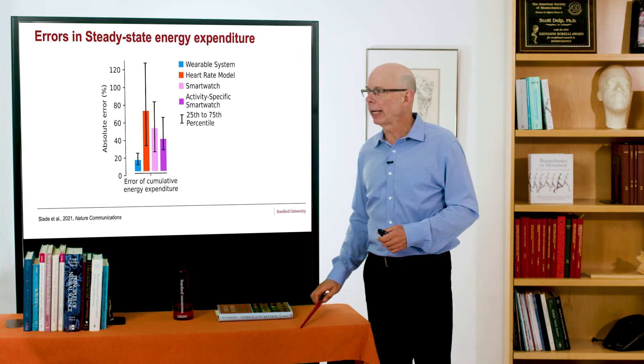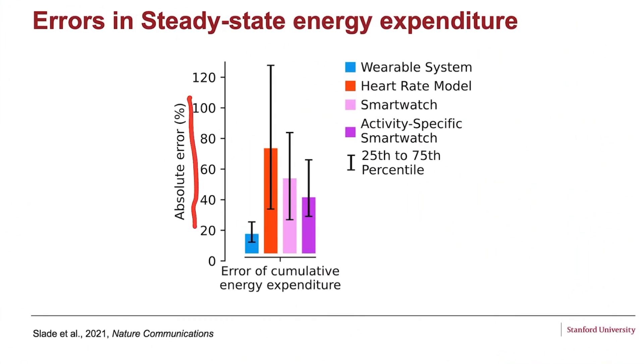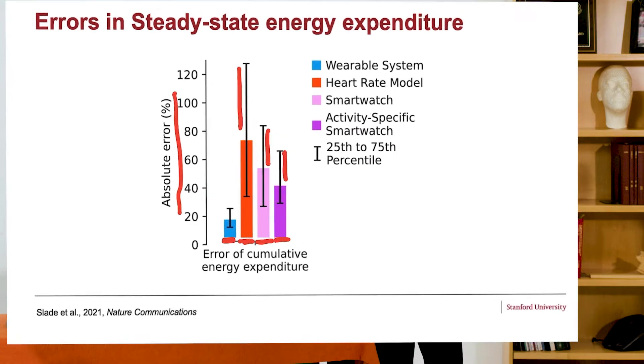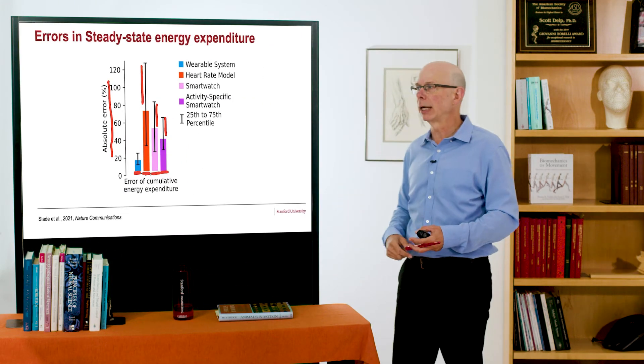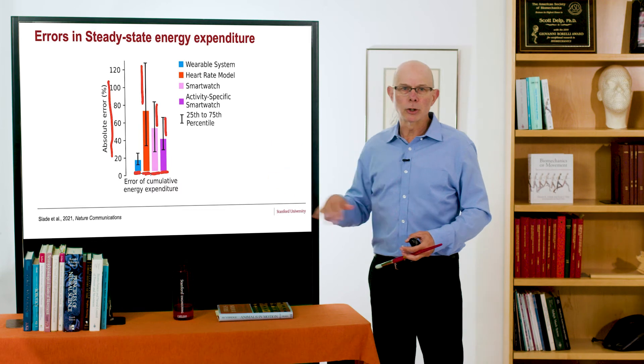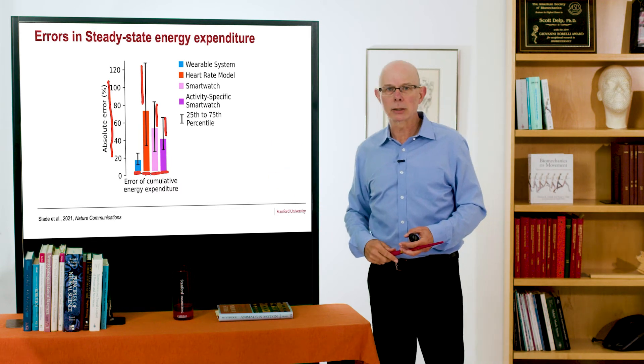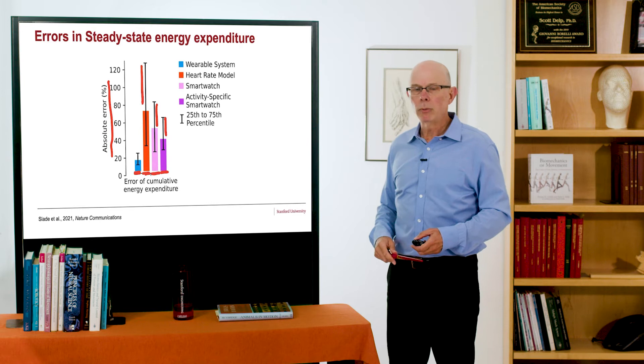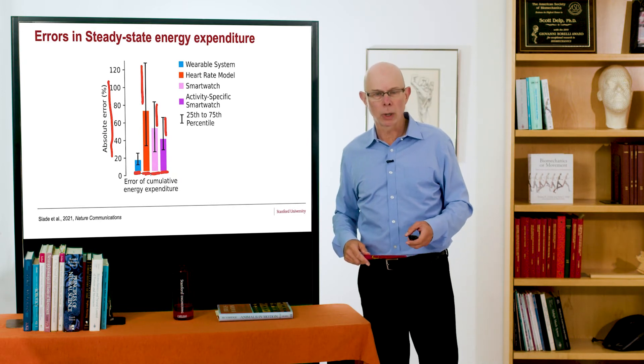So if you look at the errors associated with this, what I'm plotting here is the absolute error for several different methods. In the blue is our wearable system. The errors, as I showed, are around 14 percent. If you just get heart rate, that's shown in red, and the error is here on the order of 70 percent. Smartwatch errors were about 50 percent. If you did activity-specific smartwatch, the errors were about 40 percent. That's where you say, okay, now I'm running, now I'm walking, now I'm climbing stairs. These errors are large enough that for most studies, especially, they aren't useful. But the new device with two IMUs gives you quite accurate estimates.